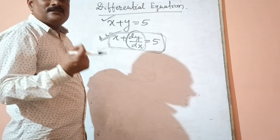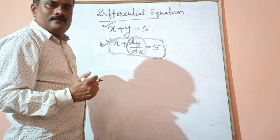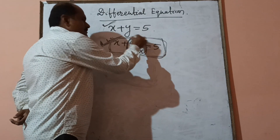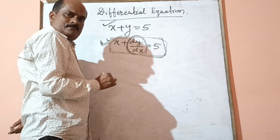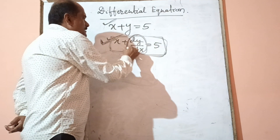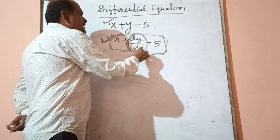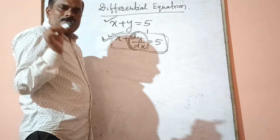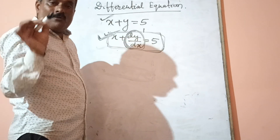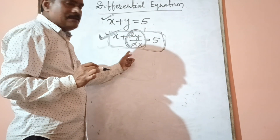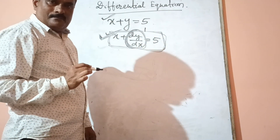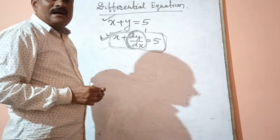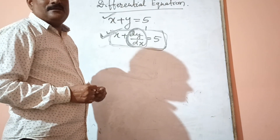What is the degree of a differential equation? The power of the highest order derivative of a differential equation is known as the degree. In dy/dx equals 5, there is no explicit power on the derivative, which means the power is 1. So the degree of this differential equation is 1.